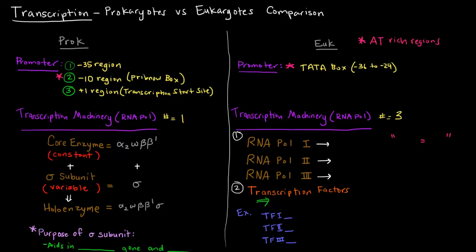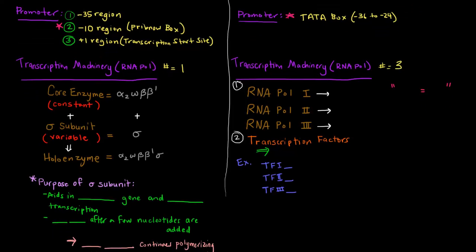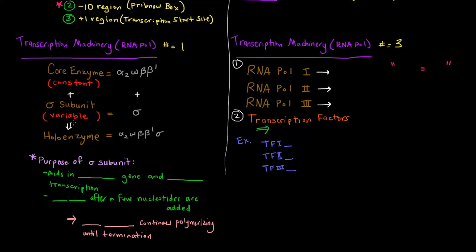Now, the sigma subunit is variable. So what is the sigma subunit? There are a bunch of different sigma subunits. These sigma subunits are dependent upon the gene being transcribed. You'll have maybe this sigma subunit number one for this gene and sigma subunit number 387 for this other gene. The different sigma subunits are used for different genes. It depends on the gene being transcribed.